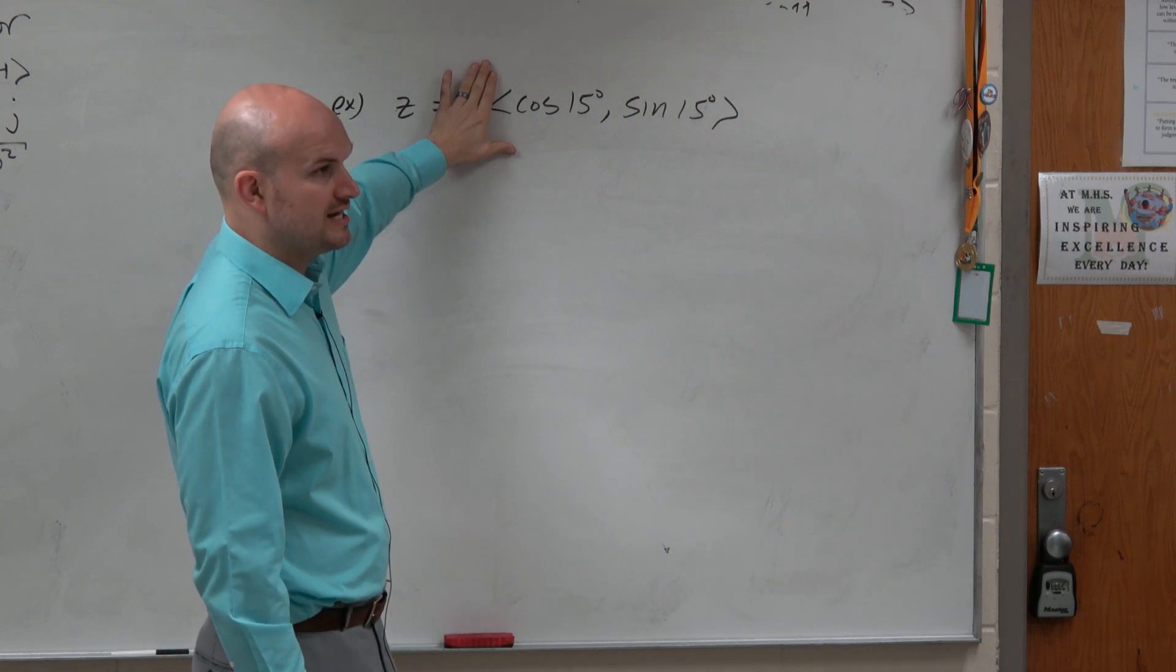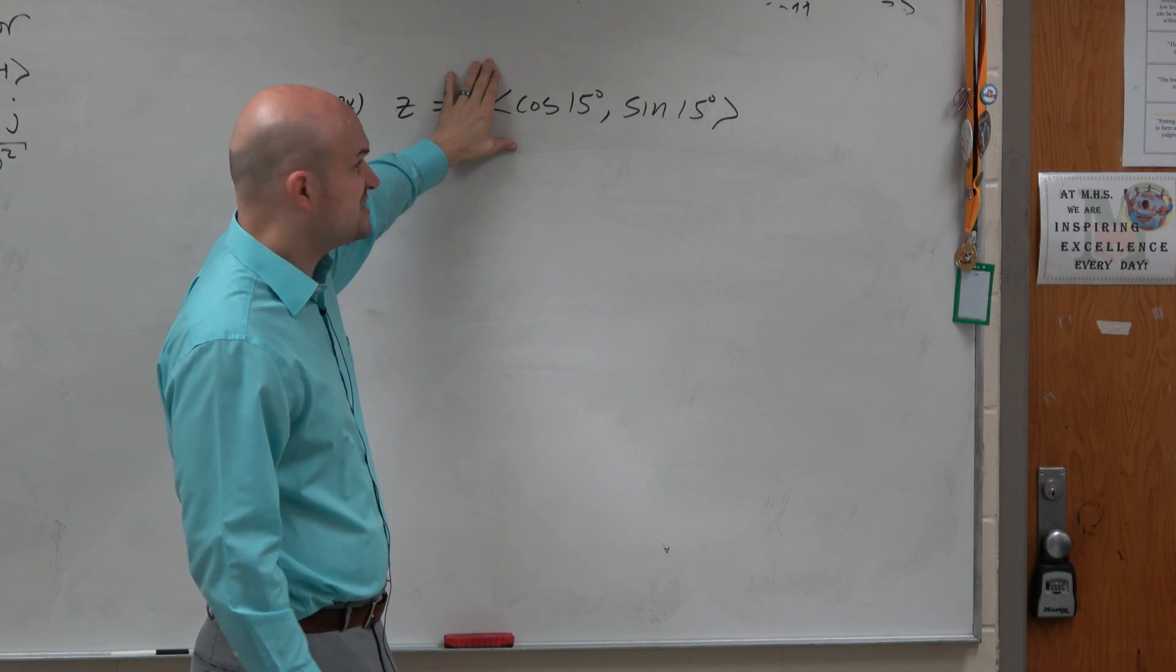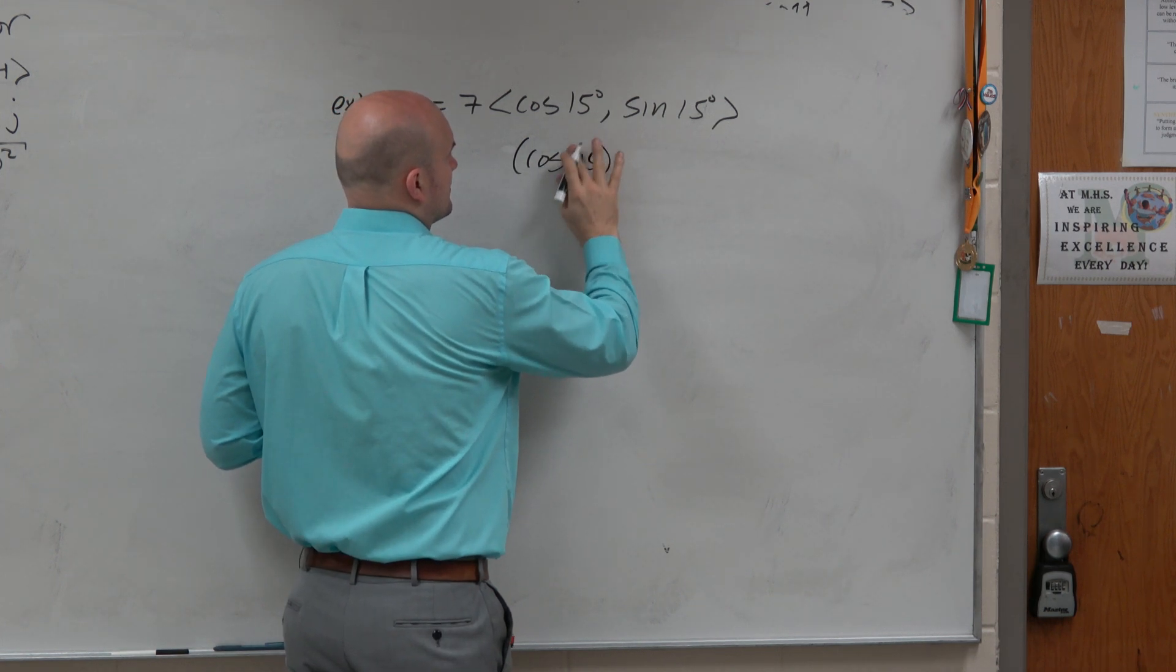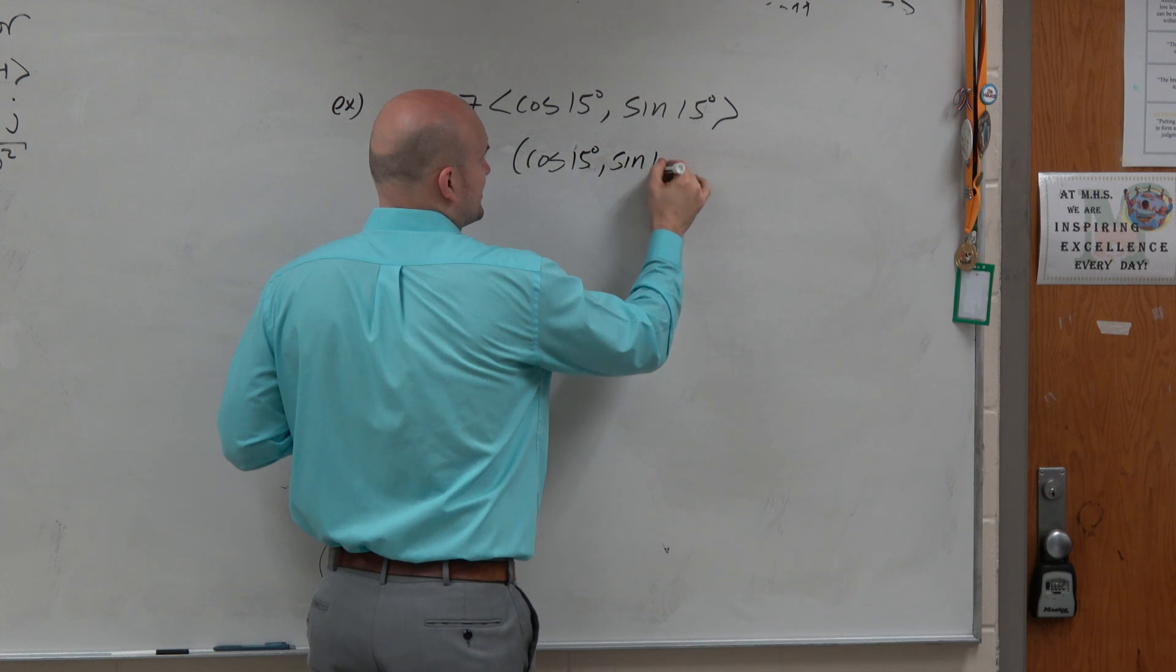Forget about the 7 for a second. If we have the cosine of 15 degrees and the sine of 15 degrees, what does that give us? If we're just going to think about this as a point, forget about this. Cosine of 15 degrees comma the sine of 15 degrees, right?